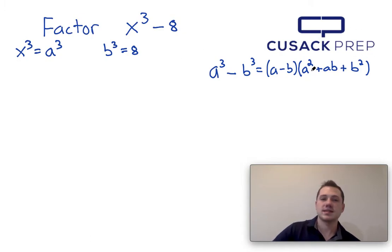If x cubed is equal to a cubed, then a must just equal x. And if b cubed is equal to 8, if I take the cubic root of both sides of this, that would tell me that b is equal to 2.